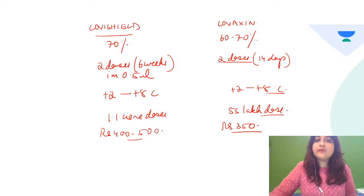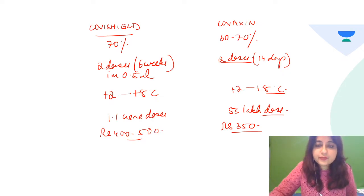The government has ordered 1.1 crore doses of Covishield from the Serum Institute of India, and 5 lakh doses of Covaxin. The cost per dose is approximately ₹400–500 for Covishield and ₹350 for Covaxin, though as of now the government is providing them free of charge.